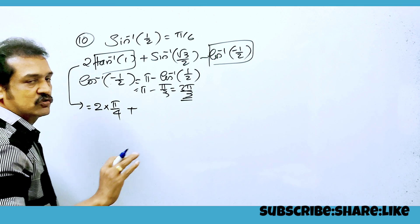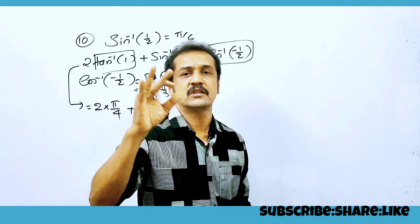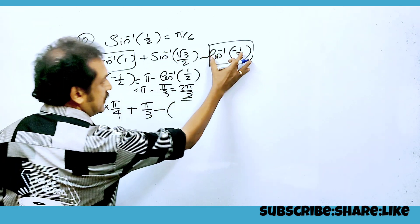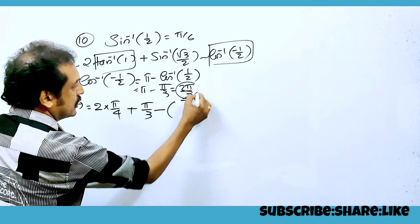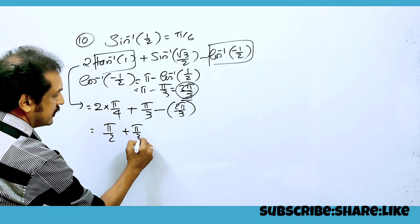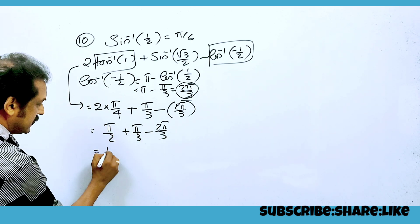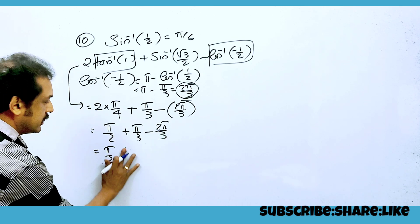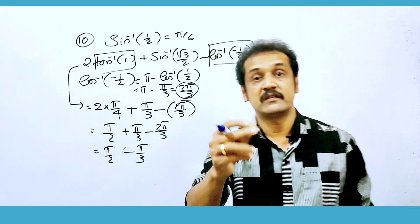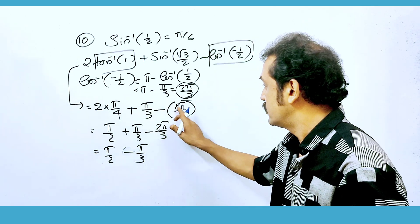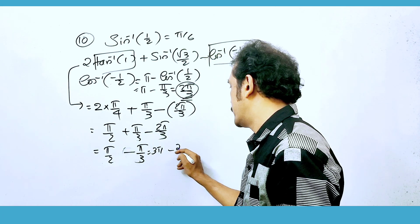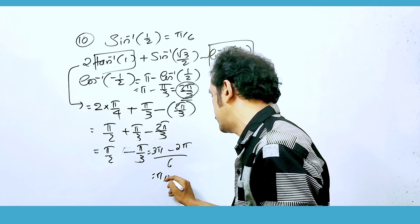Plus sin⁻¹(√3/2). sin⁻¹(√3/2) is π/3, that is equal to 60°. So we have 2tan⁻¹(1) + sin⁻¹(√3/2) - cos⁻¹(-1/2) = π/2 + π/3 - 2π/3. That gives π/2 - π/3, and π/3 - 2π/3 becomes -π/3. So π/2 - π/3 = 3π/6 - 2π/6 = π/6.